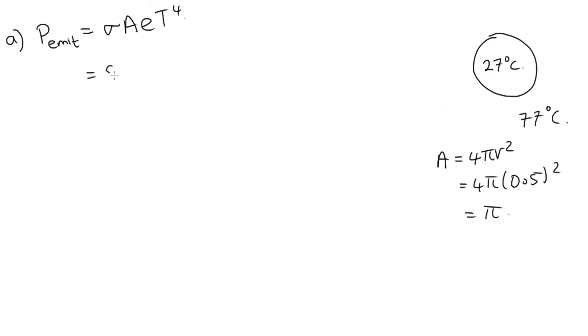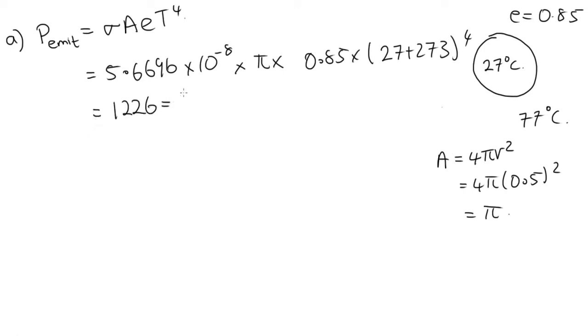So this σ is 5.6696 × 10⁻⁸ times the surface area times the emissivity, which we're told was 0.85, times the temperature to the power of 4. So that's 27 plus 273, to the power of 4. Solving that on the calculator, we get 1226, which is 1230 watts, to three significant figures.